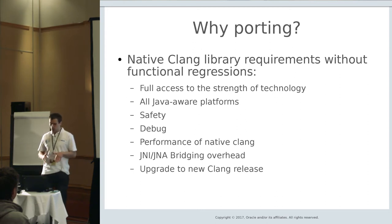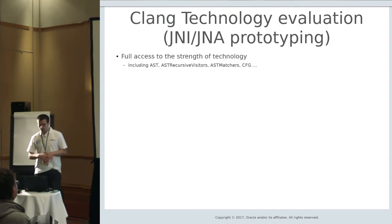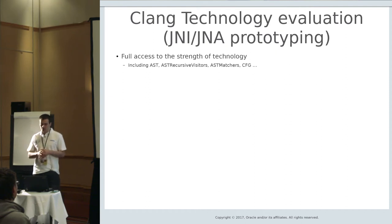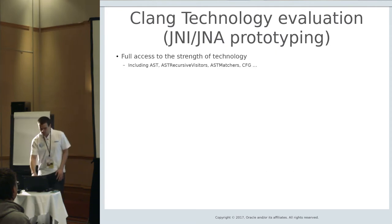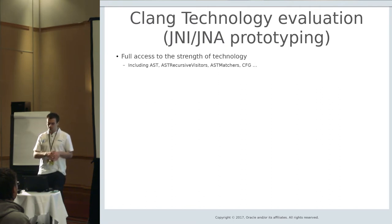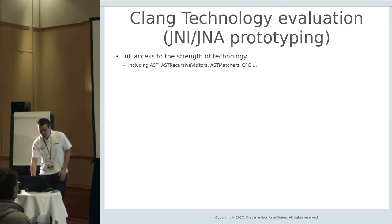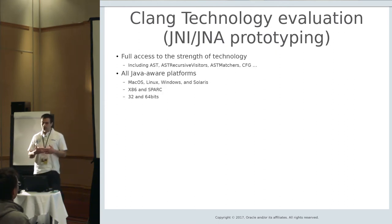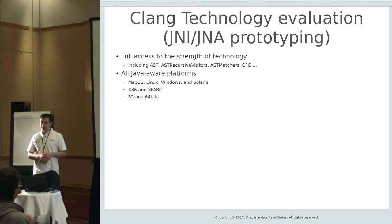So the first thing we did was evaluate the whole technology. First of all, we needed full access to the internals of Clang itself. That means we needed to access internal data structures like the abstract syntax tree and some wrappers like AST matchers, control flow graph, etc. By default, you do not have that in Clang, and the libraries which IDEs can use to interact with Clang do not provide interfaces to these internal structures. Second of all, we are developing a Java IDE.